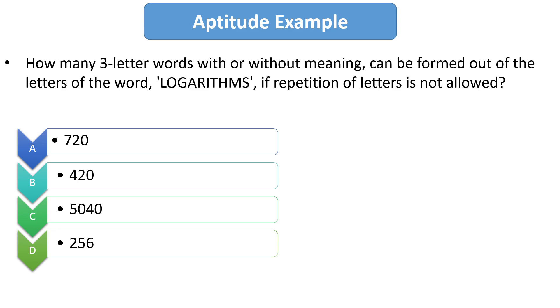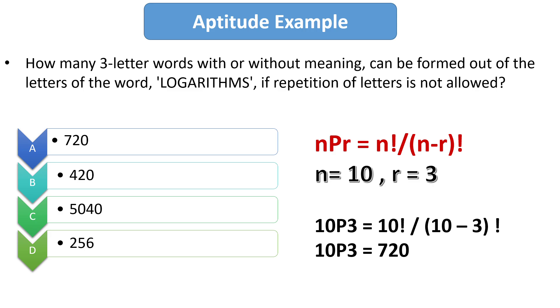So here we have to use the permutation formula. The given word has total 10 different letters. So the value of n will be 10 and we have to find a 3 letter word, so the value of r will be 3. And when we will solve this question with the permutation formula then we will get the answer equal to 720. So the right answer is 720.